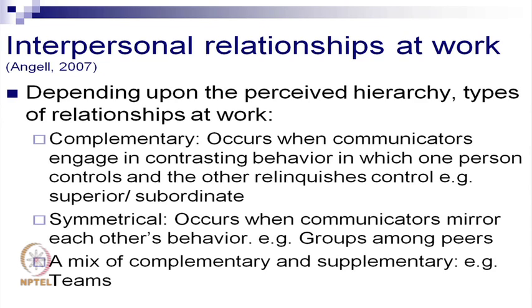Interpersonal relationships at work: depending upon the perceived hierarchy, we have two main kinds of relationships — complementary and symmetrical. Complementary relationships occur when communicators engage in contrasting behavior, where one person controls and the other relinquishes control — for example, a superior and subordinate. Symmetrical relationships occur between peers, when communicators mirror each other's behavior. Teams are a mixture of complementary and symmetrical relationships, where you are responsible to someone senior in hierarchy and also constantly communicating with peers to work towards a common goal.